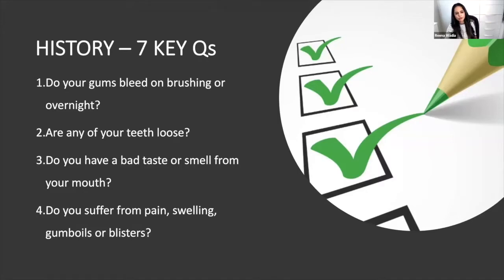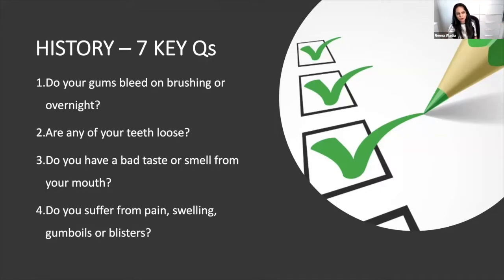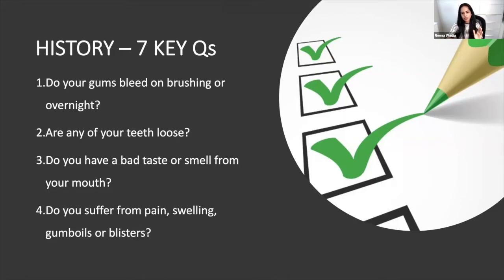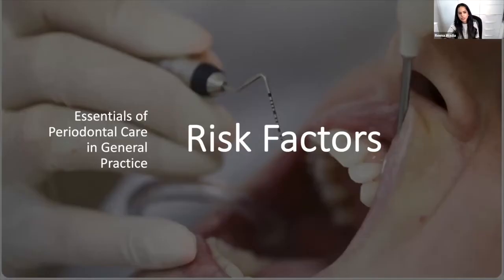The reason to ask these questions is that perio patients won't volunteer a history of presenting complaint — they'll say they're fine. Then you put the chair back and find grade three mobile teeth with grade two furcation involvement everywhere. Get in the habit of asking these quick questions to all your patients, even if they say they have no issues, because you might be surprised.